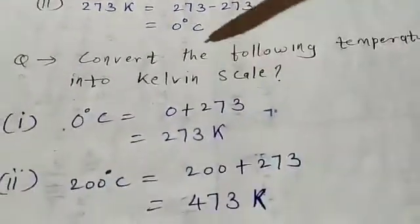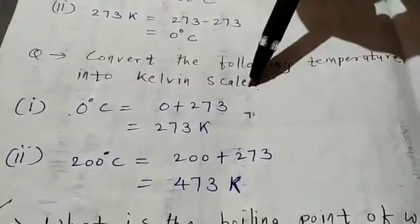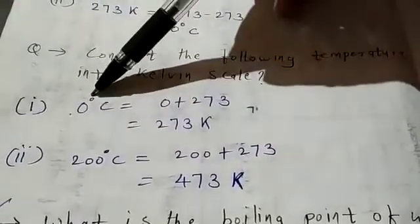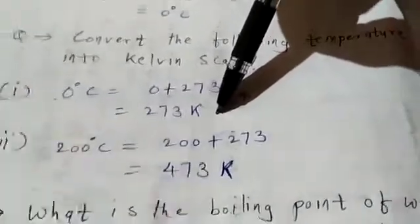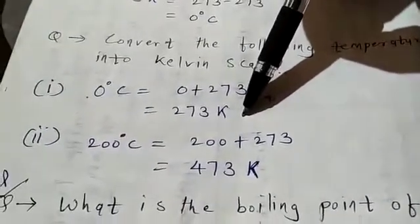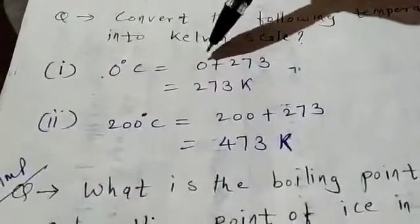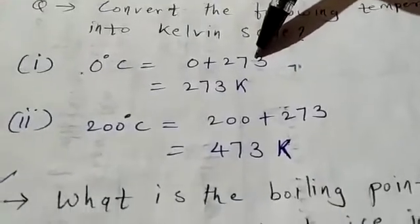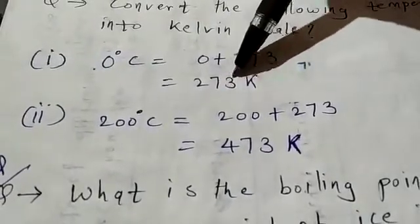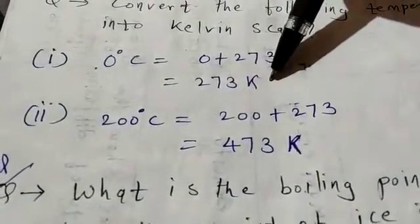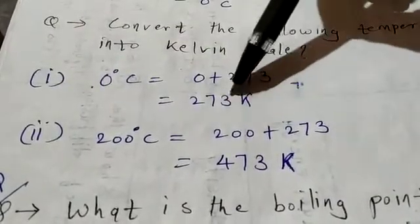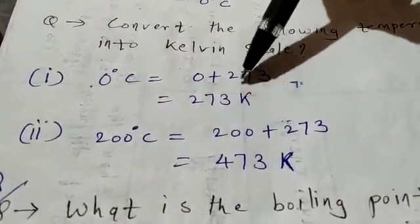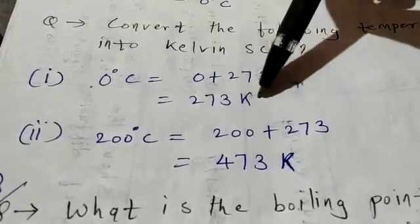Next, convert the following temperature into Kelvin scale. Means degree Celsius you have to convert to Kelvin. So what will you do? Add 273. 0 plus 273 — how much? 273 K. You will not write degree K. In case of Kelvin, directly write only K, capital K — 273 K.